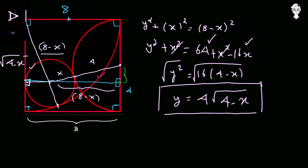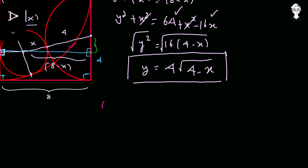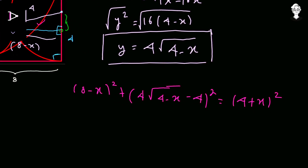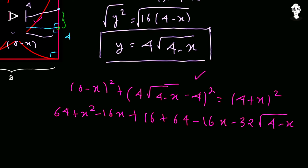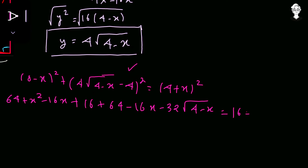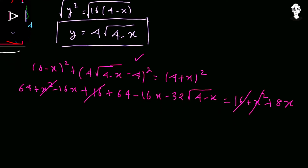Now applying the Pythagorean theorem to this triangle, where the hypotenuse is X + 4, the base is 8 − X, and the side is 4√(4 − X) − 4: (8 − X)² + [4√(4 − X) − 4]² = (4 + X)². Expanding: 64 + X² − 16X + 16 + 64 − 16X − 32√(4 − X) = 16 + X² + 8X. Simplifying and isolating the radical term: 32√(4 − X) = 128 − 40X.